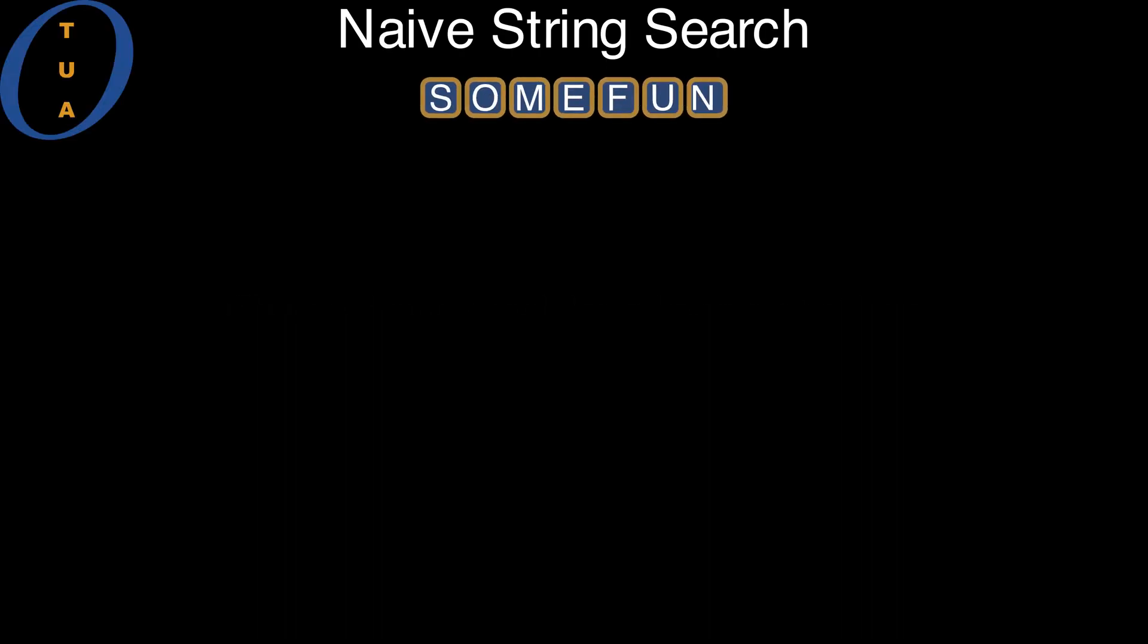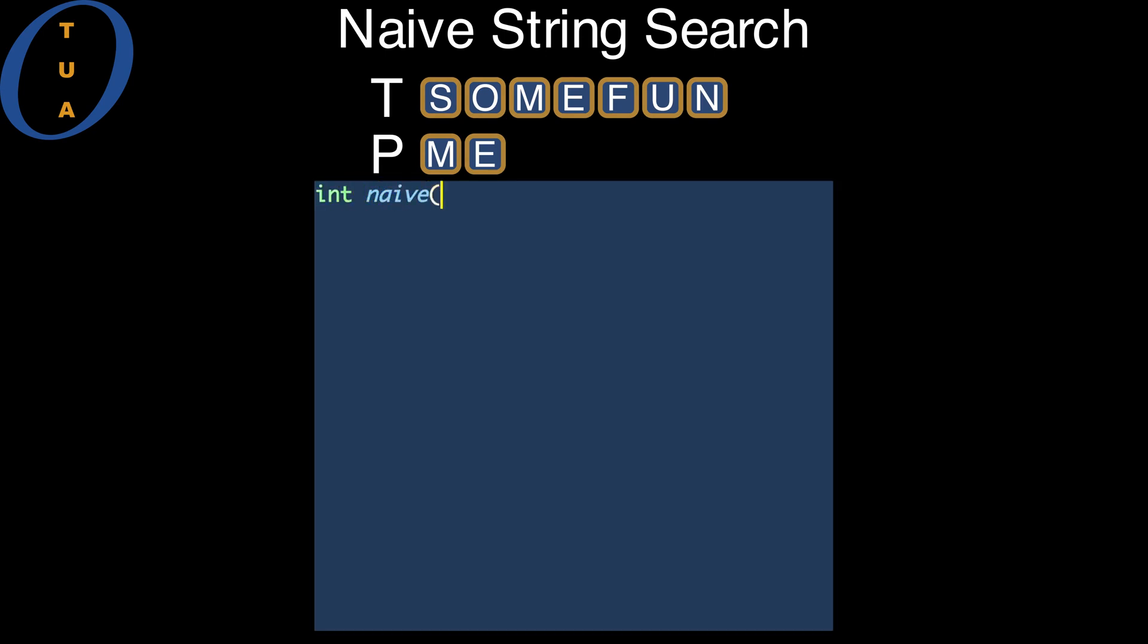In the naive algorithm, we take as input the text called T, its length called n, the pattern called P, and its length called m. We check whether the pattern occurs in the text at every possible offset using an index i that goes from zero all the way up to n minus m.